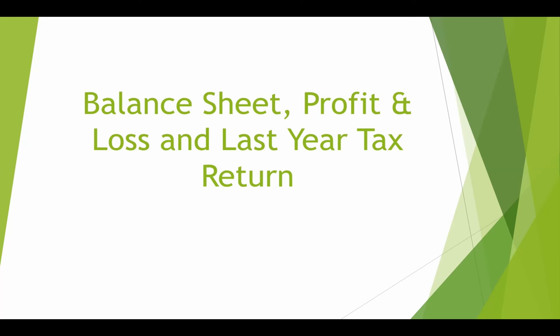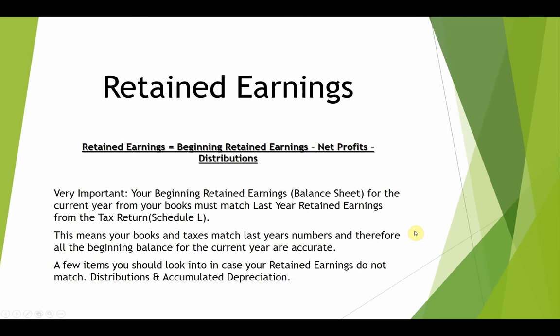The balance sheet, profit and loss, and last year's tax return are the three items we need to get started on the tax return. In the balance sheet we have retained earnings, which are the most important number to start. Retained earnings are accumulated profits the corporation earned throughout the years minus any distributions the owners took out. The first thing you do is match the book retained earnings with the tax return retained earnings. If they match, you have a clean tax return. If they don't match, you need to review and make adjustments.